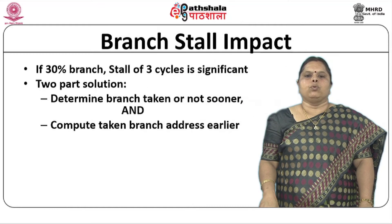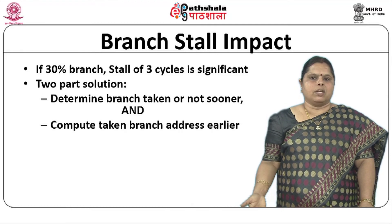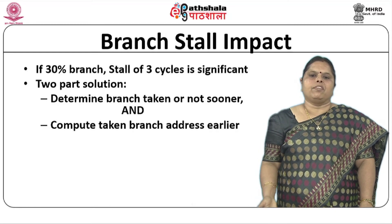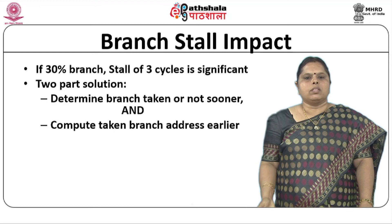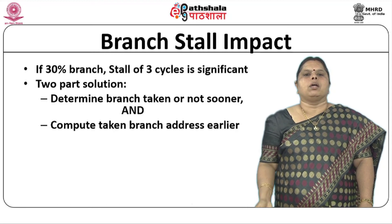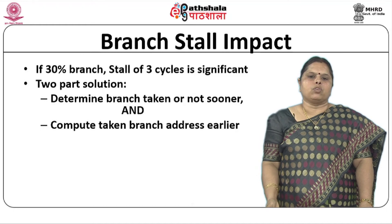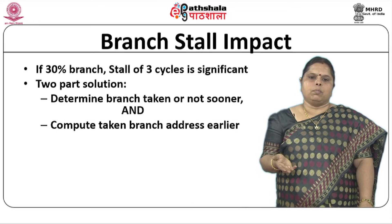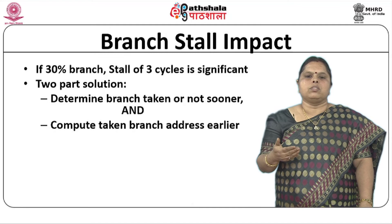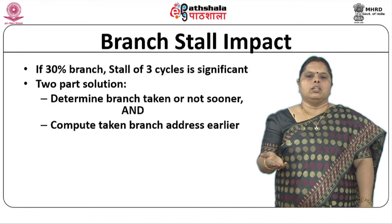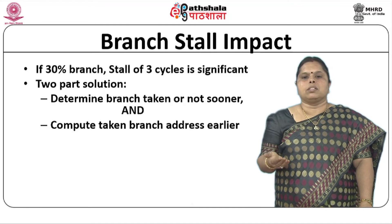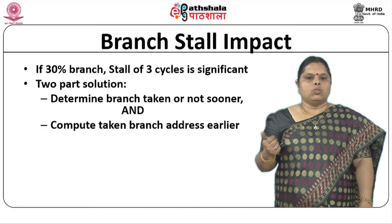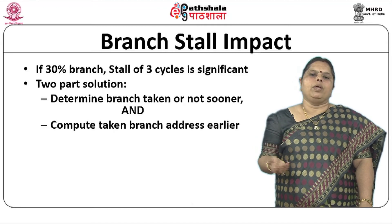Can we just ignore this problem? No, because branches are very frequent — about 30 percent of instructions are branch instructions. With a stall of 3 cycles per branch and 30 percent branch frequency, the penalty is very high and causes a huge dip in performance. This is obviously not acceptable. A fundamental rule is that you must evaluate the branch condition early and also evaluate the branch target address early, so that the branch can be resolved sooner.